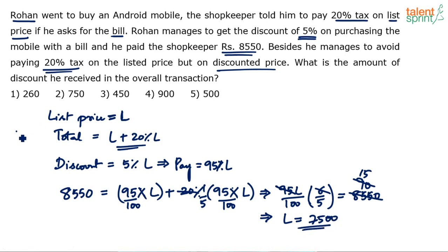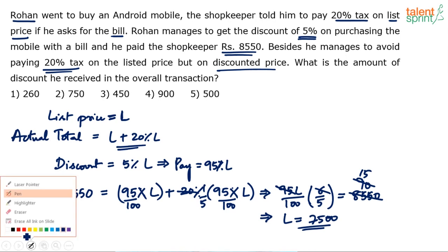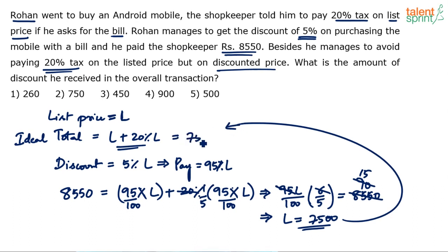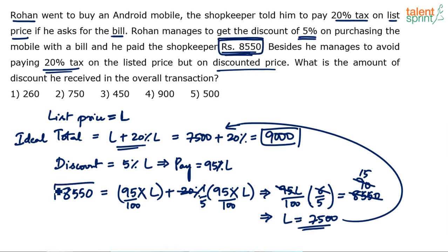Now, the ideal total — what should the total amount be ideally? The list price plus 20% tax: L plus 20% of L. Substituting L = 7,500: that's 7,500 plus 20% of 7,500, which is 1,500. So the ideal total comes out to be ₹9,000. The ideal total should have been ₹9,000, but he's actually paid only ₹8,550. So, how much discount did he get overall? He got ₹450 of discount.